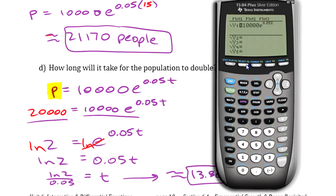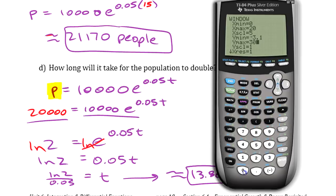Before we look at the graph, we have to set up the window. I'm going to go from 0 to 20 for the domain — number of years — going by 5s. For the range, I'm going to use a maximum of 30,000, since we've already done it algebraically and the solutions are around 20,000 and 21,000. I'm going to start at negative 10,000 so I have some blank space underneath the axis, and make the scale 5,000. So we look at the graph then.